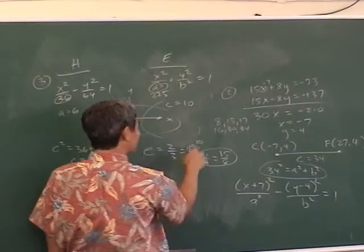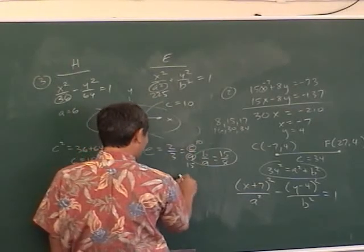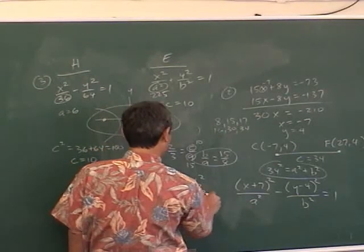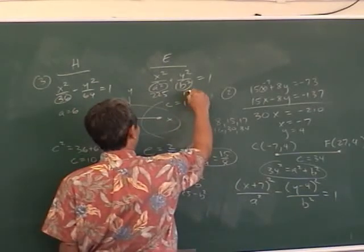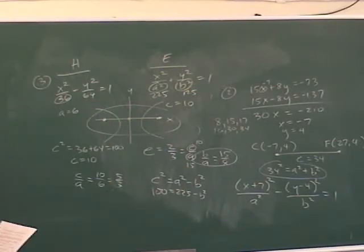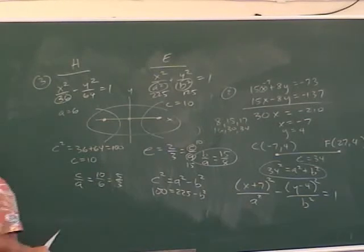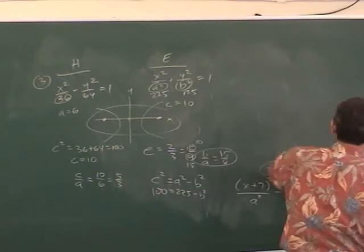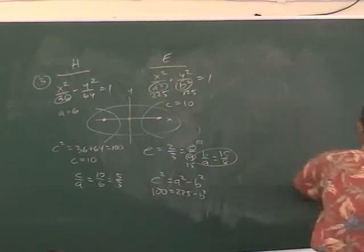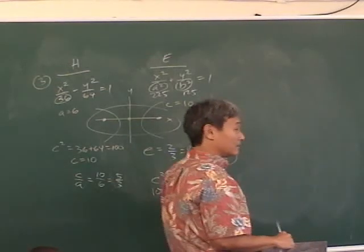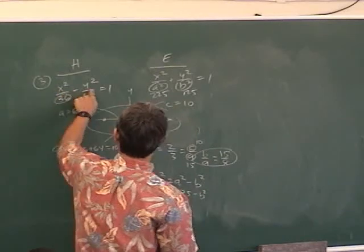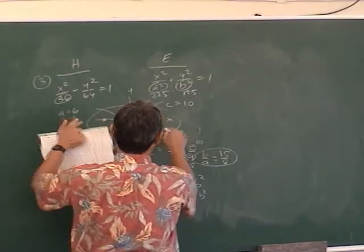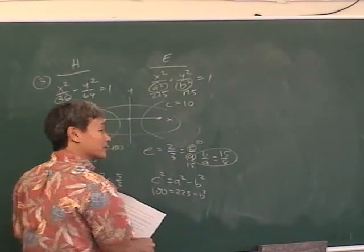c is 10 and a is 15. In an ellipse, c² equals a² minus b², so 100 equals 225 minus b², therefore b² equals 125. And since the center of the hyperbola is at the origin and they share the same foci, the center of the ellipse is at the origin as well.